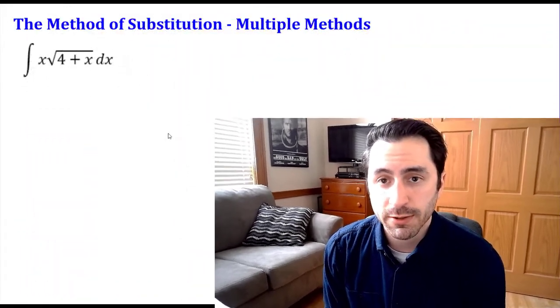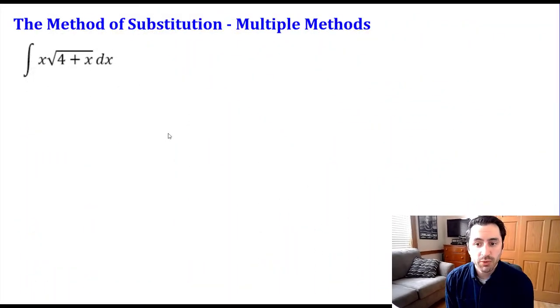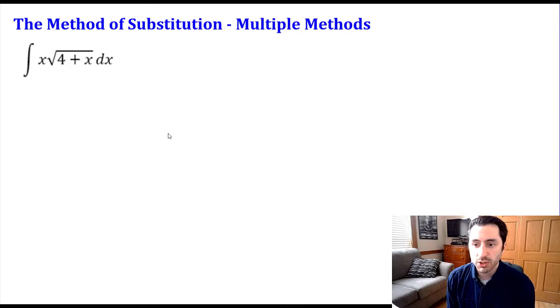In this video we're going to continue looking at the method of substitution when working with indefinite integrals. What I want to take a look at in this example is how there's no one correct way to do substitution — oftentimes there are multiple different substitutions we can use that will lead us to the correct answer. Our example here is the integral of x times the square root of (4 plus x) dx, and I want to show you two different substitutions we can use.